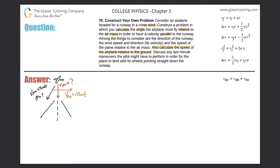So if I construct a coordinate system, there are three vectors: V_PA (velocity of plane relative to air) at 70 meters per second at angle theta; V_PE (velocity of plane relative to earth) pointing straight down — that's the resultant; and V_AE (velocity of air relative to earth) pointing east at 10 meters per second.